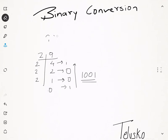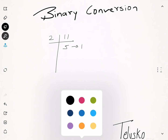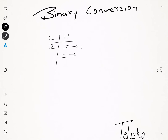Let's take another number — eleven. We divide eleven by two. Two into five gives ten, remainder one. Two into two gives four, remainder one. Two into one gives two, remainder zero. Two into zero gives zero, remainder one. Reading upwards, the answer is 1011. That's how you convert a number from decimal to binary.